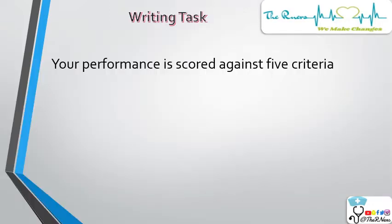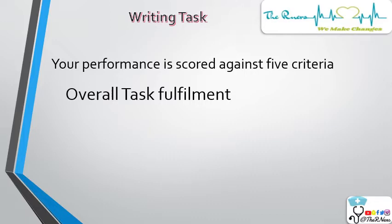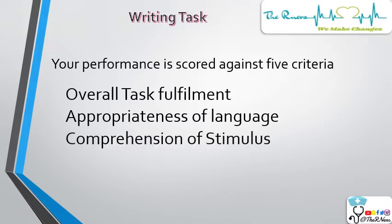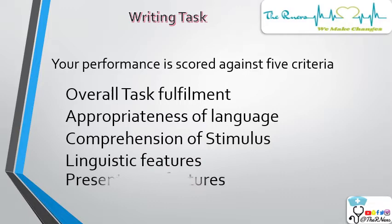Now let's move into the main part of this video — the criteria on which you will be evaluated for the writing task. We have five criteria: the first is overall task fulfillment, second is appropriateness of language, third is comprehension of stimulus, fourth is linguistic features, and the fifth is presentation features. I'll take you through each criteria one by one.